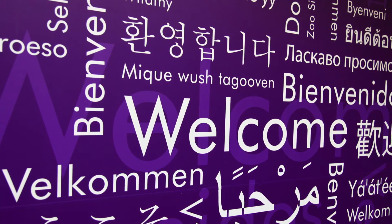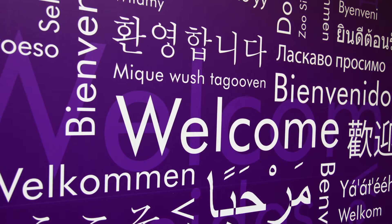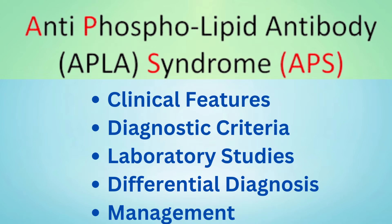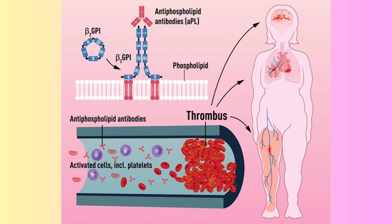Welcome to this video on antiphospholipid antibody syndrome. We will discuss the clinical features, diagnostic criteria, laboratory studies, differential diagnosis, and management. Antiphospholipid syndrome is a condition in which antibodies develop against vascular endothelial cells and platelets, resulting in vasoconstriction, thrombosis, placental infarction, and placental losses.